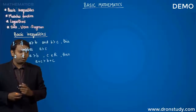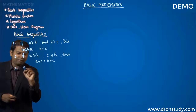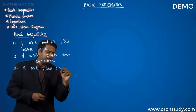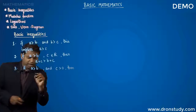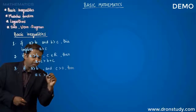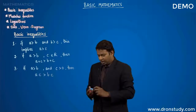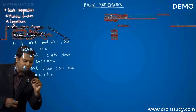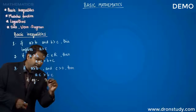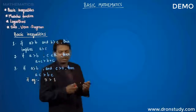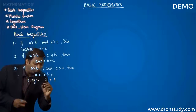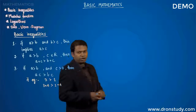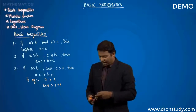The third inequality: if a is greater than b and c is greater than 0, then a times c will be greater than b times c. For example, if 3 is greater than 1 and we multiply both sides by 4, then 3 times 4 remains greater than 1 times 4. So multiplying by a positive number preserves the inequality.